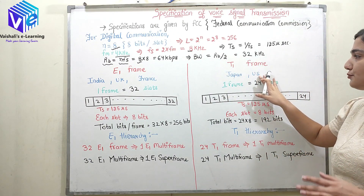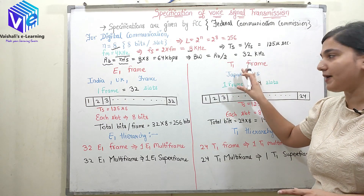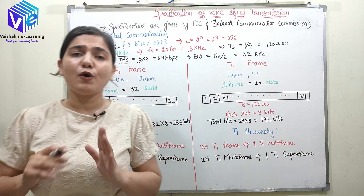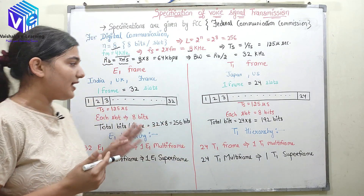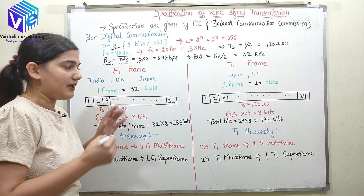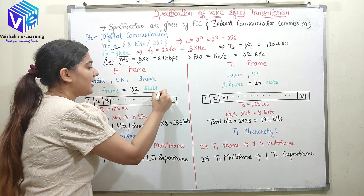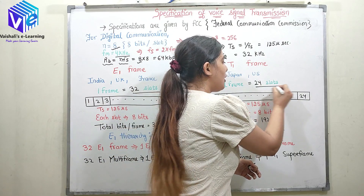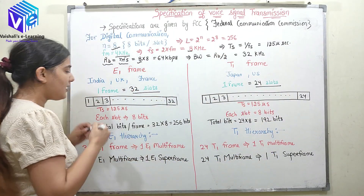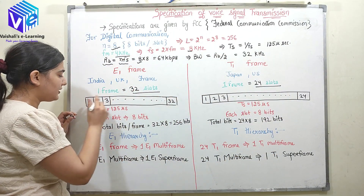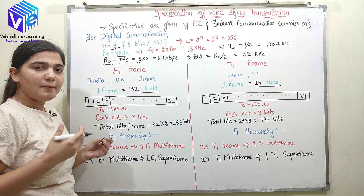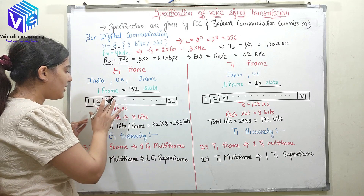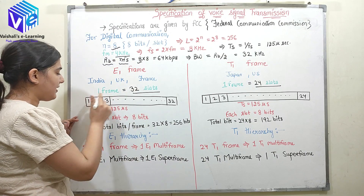The T1 frame is used in Japan and the US. Similarly, whatever was used in the US was followed by Japan. The key difference is that one E1 frame has 32 slots, while one T1 frame has 24 slots. This relates to time division multiplexing as discussed in the previous video.